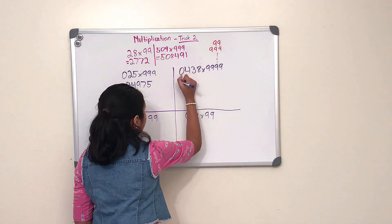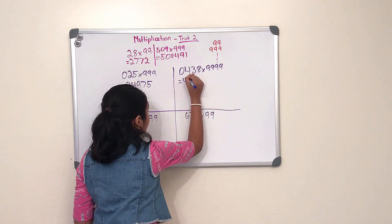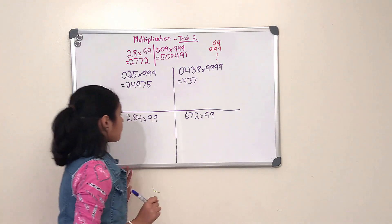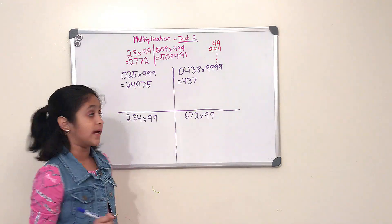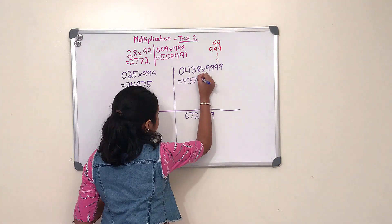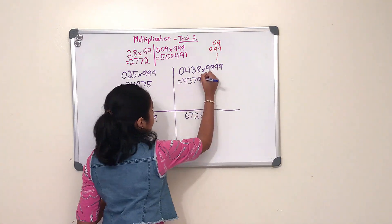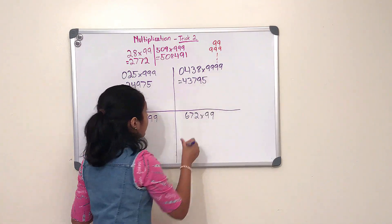And then we have to do all from nine and the last from ten. So nine minus zero, that is nine, nine minus four, that is five, nine minus three, which is six.